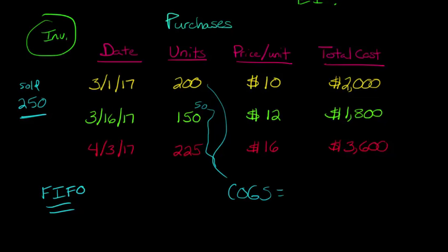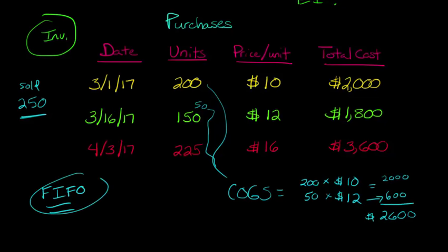So let's compute our cost of goods sold now. We've got this 200, because those were the first in, they're going out now, and the price per unit was $10 a t-shirt. So we're going to have 200 times $10. But remember that we sold 250 t-shirts, and this is just 200, so we had to take another 50 out of here, out of that March 16th purchase. So we go with the 50 from that date, and then we multiply that by the $12. So now this is going to give us, so we've got 2,000 here, and then we've got 600. This is 600, so that gives us 2,600. So that would be our cost of goods sold under the FIFO costing assumption.